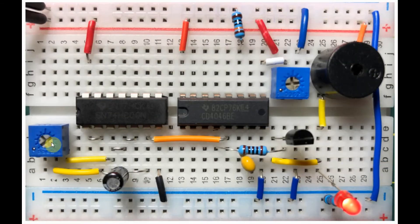This pot is used to change the frequency of the clock signal. And this pot is used to vary the burst rate.